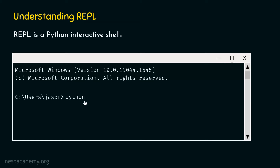You need to type 'python' in order to activate the Python interactive shell, then press enter. When you press enter, you will observe three arrows. These three arrows indicate that the Python interactive shell is now active, which means Python is now ready to receive your commands. You can ask Python to perform tasks by typing Python commands, and the interactive shell allows you to do that.